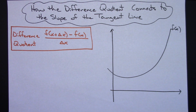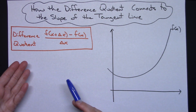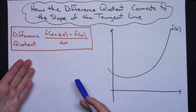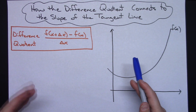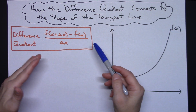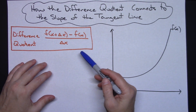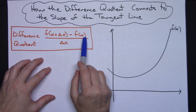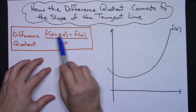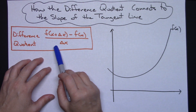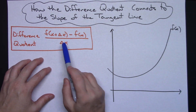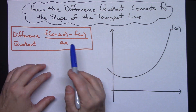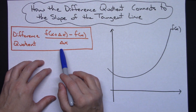In this video I want to talk about how the difference quotient connects to the slope of the tangent line. Initially you are introduced to this difference quotient probably pretty early into a pre-calc class. You work it out, you do a lot of simplifications with it on various types of functions. It may not look exactly like this when you're in pre-calc because they may use an H there. There are different versions of the difference quotient.